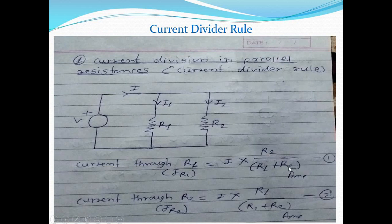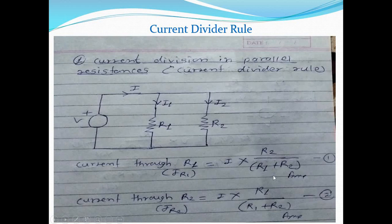Similarly, the formula for current through R2, that is IR2, is equal to total current I multiplied by the opposite resistance R1, divided by the sum of resistances R1 plus R2. To recall: total current multiplied by the opposite resistance, divided by the sum of resistances in which current gets divided. Make sure that total current gets divided into two resistances only.